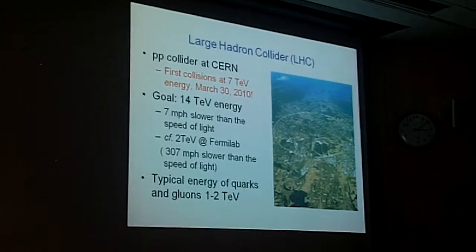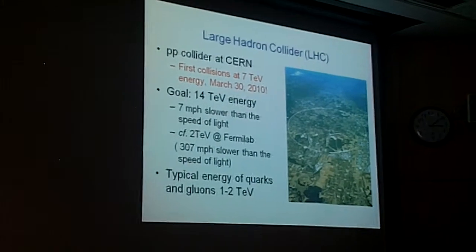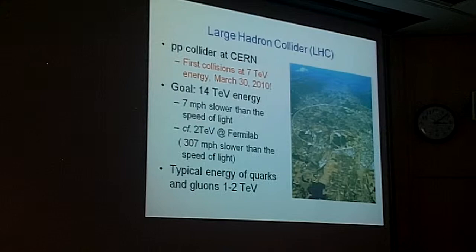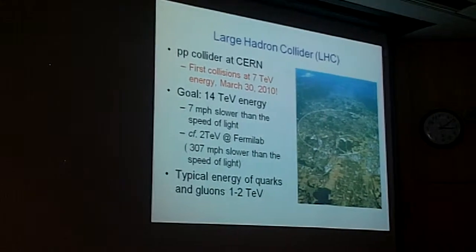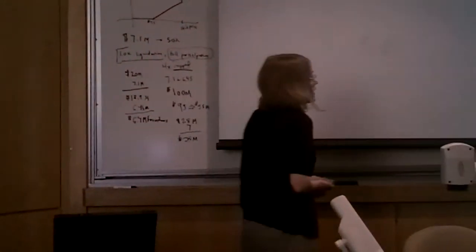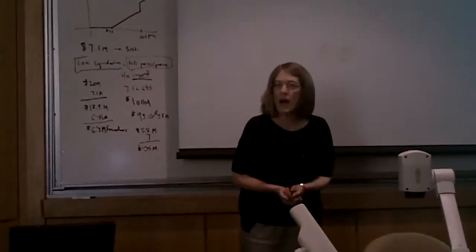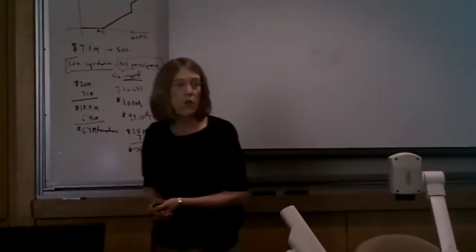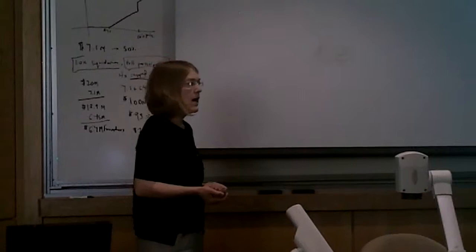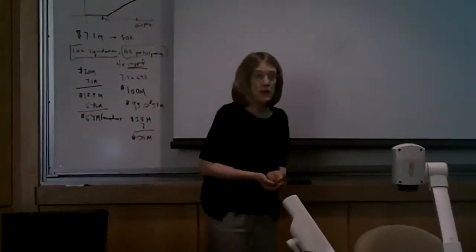The first collisions were at an energy of 7 TeV, March 30th, as I've said. The goal is to get to an energy of 14 TeV, which is approaching the speed of light. But the important thing about the LHC is really that the quarks and gluons within the proton have a typical energy of 1 to 2 TeV. So with the LHC, for the first time, we're probing the TeV energy scale.